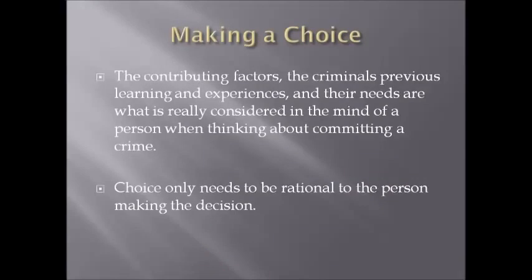The contributing factors, past experiences, costs-and-benefits consideration, and individual needs are what the theory establishes goes into a criminal's thinking before committing a crime. The theory is highly based on the assumption that a criminal is thinking rationally before committing a crime. However, the choice only has to be rational to the individual — not to anyone else. For example, it might be rational for a criminal to steal food because he's hungry, but to someone else that is irrational because he could simply buy food or find something at home.